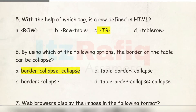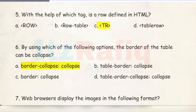Number 5: With the help of which tag is a row defined in HTML? It is 'tr'. tr means table row. Number 6: By using which of the following options can the border of the table be collapsed? It is the 'border-collapse' property with value 'collapse'.